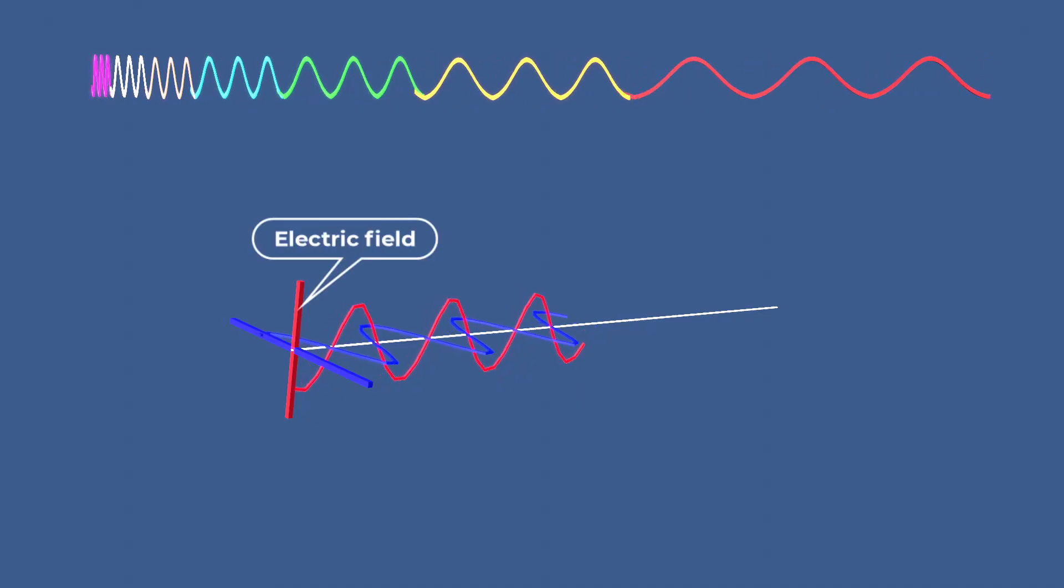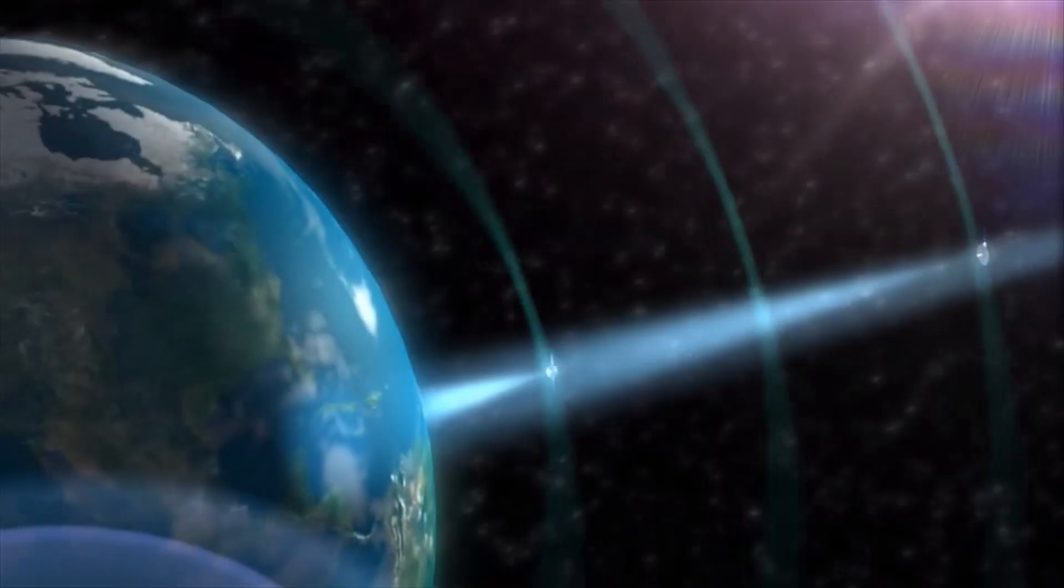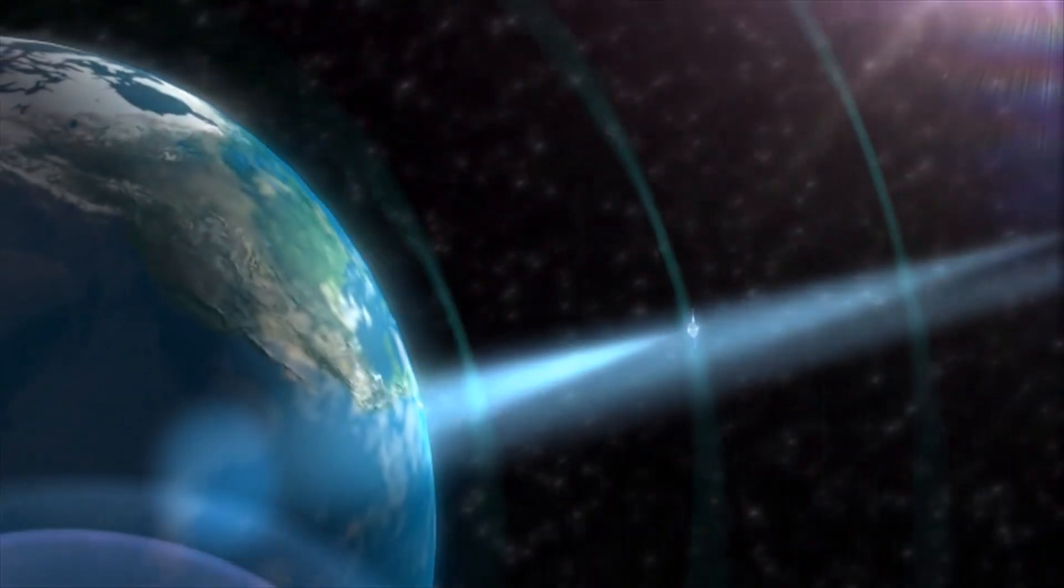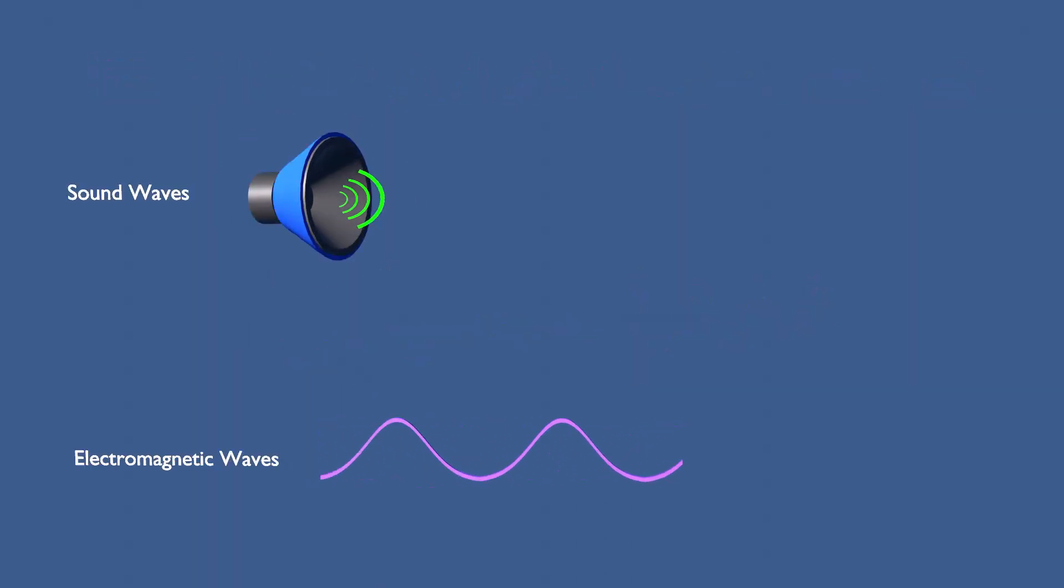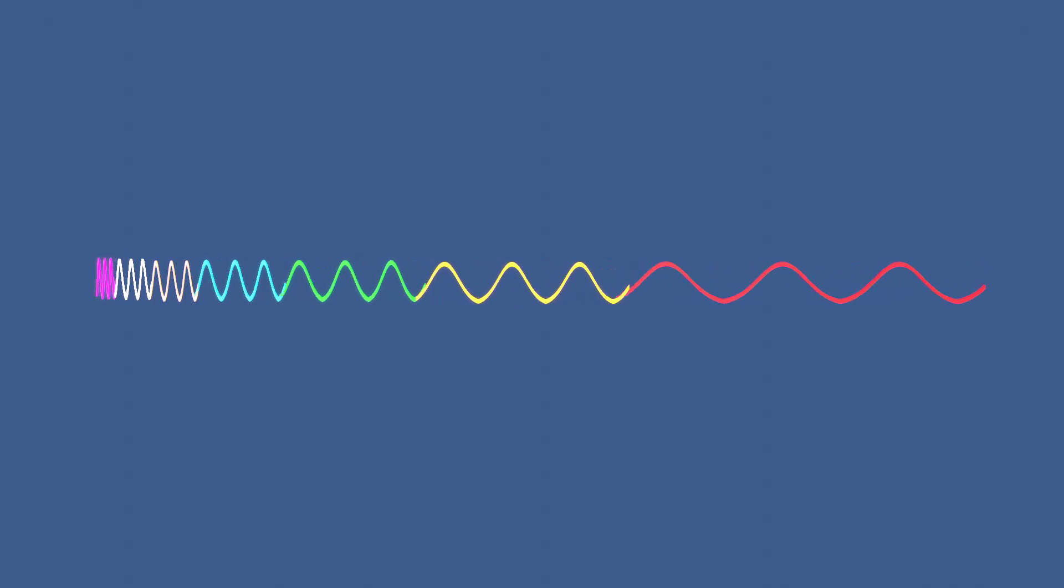These waves are made of electric and magnetic fields that vibrate at right angles to each other and travel through space at the speed of light. Unlike sound waves, electromagnetic waves do not need any medium and can travel even through vacuum. The electromagnetic spectrum is divided into different regions.